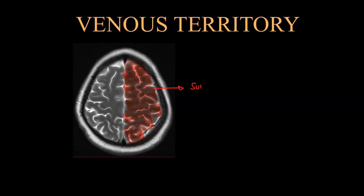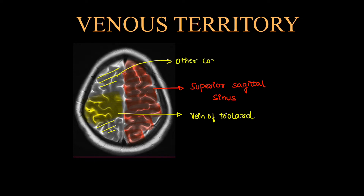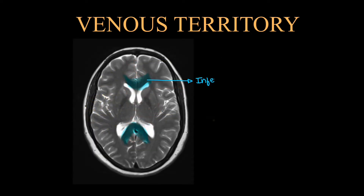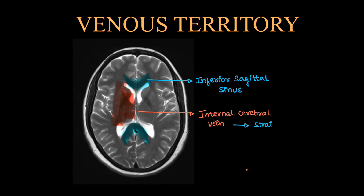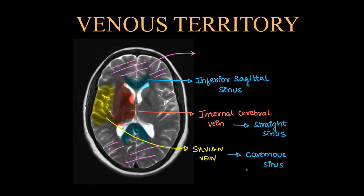Now we will look at their drainage territories. The superior sagittal sinus drains the parietal and frontal lobes via the vein of Trolard and other cortical veins. The corpus callosum area is drained by the inferior sagittal sinus. The basal ganglia and internal capsule are drained by the internal cerebral vein, which further drains into the straight sinus. The temporal lobe cortex is drained by the sylvian vein, which drains into the cavernous sinus, while other cortical veins drain into the superior sagittal sinus.